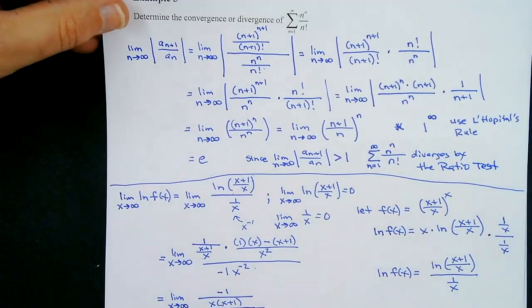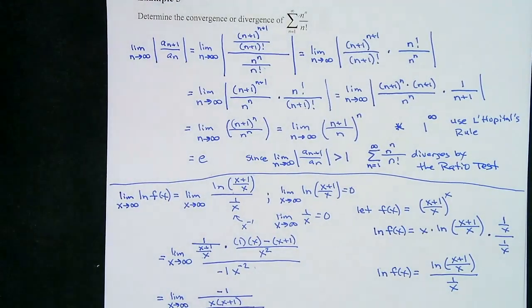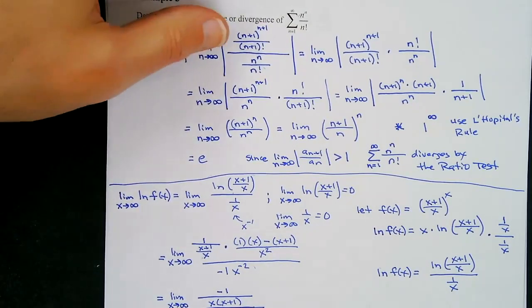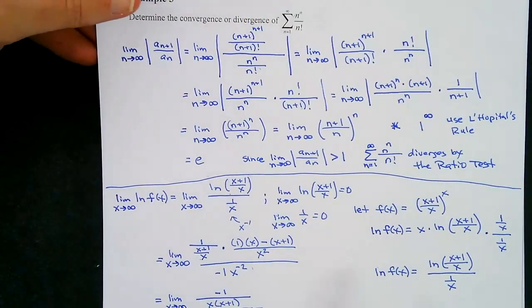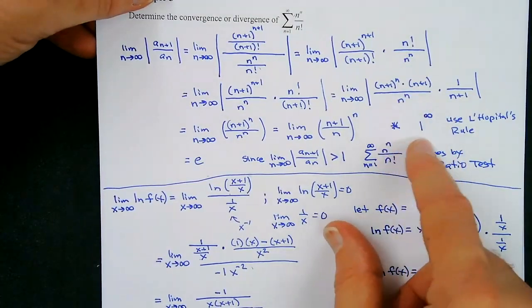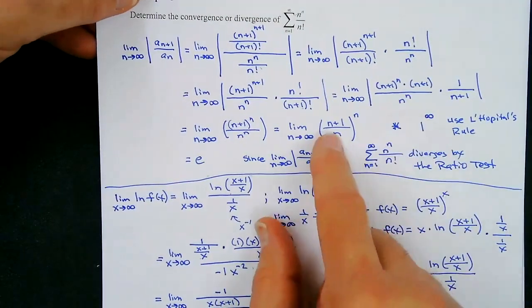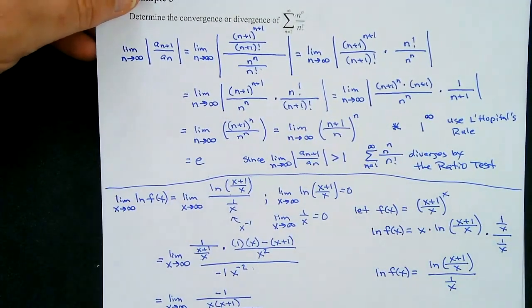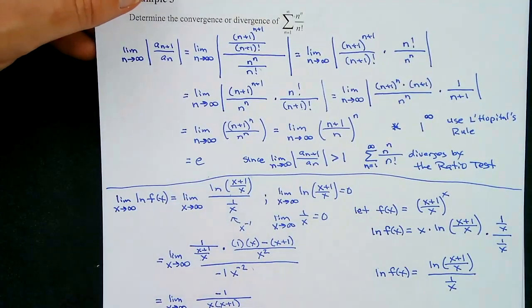I would never say this was easy — this is a really complex problem. We had to use L'Hôpital's rule because we encountered an indeterminate form. That's why I went through this: you've got to find the limit using L'Hôpital's rule when you hit those indeterminate forms.